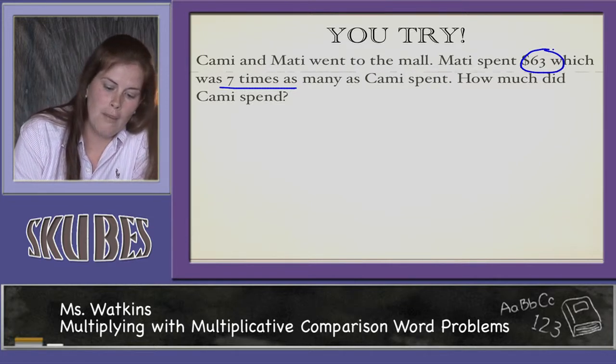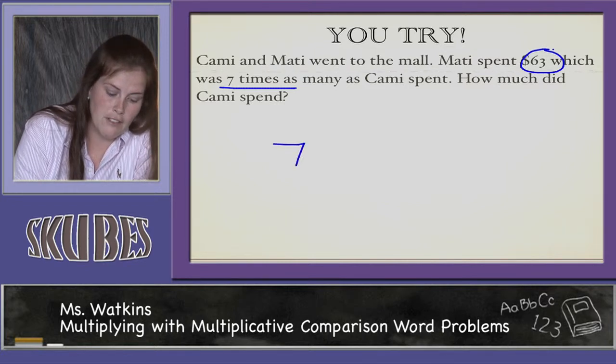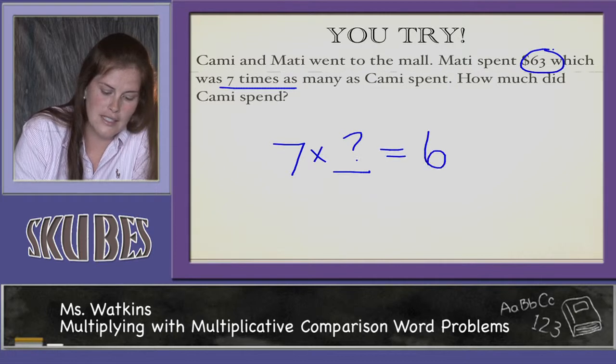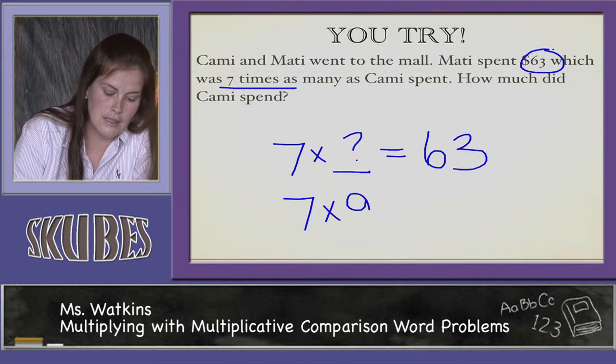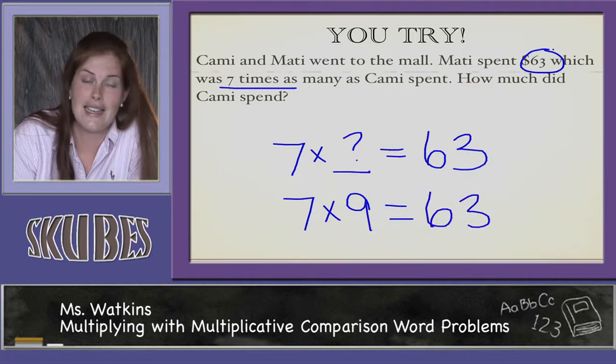So we know Maddie spent $63 and that was 7 times as much as Cammy spent. So we have to figure out what times 7 equals 63. So we know 7 times 9 equals 63. So Cammy spent $9.